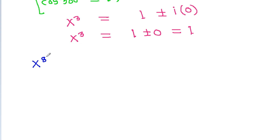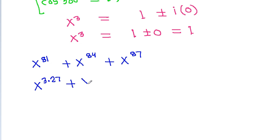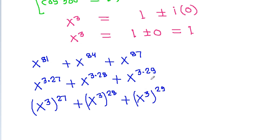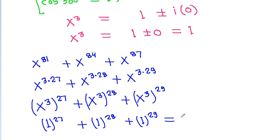So x power 81 minus x power 84 minus x power 87 is x power 3 times 27 minus x power 3 times 28 minus x power 3 times 29. It is x power 3 raised to 27 minus x power 3 raised to 28 minus x power 3 raised to 29. And since x cubed is 1, it is 1 power 27 minus 1 power 28 minus 1 power 29, that is equal to 1 minus 1 minus 1, which equals 3.